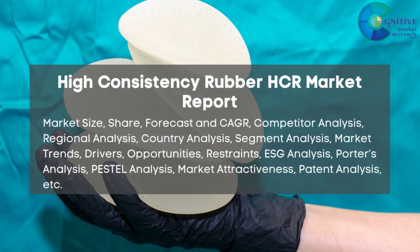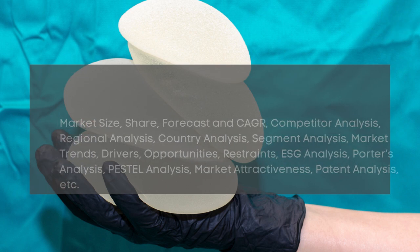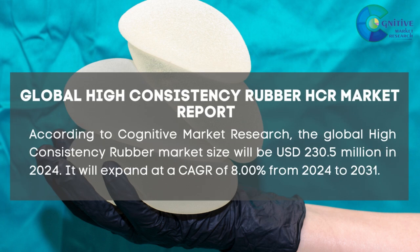High Consistency Rubber HCR Market Report. According to Cognitive Market Research, the global High Consistency Rubber market size will be US$230.5 million in 2024. It will expand at a CAGR of 8% from 2024 to 2031.